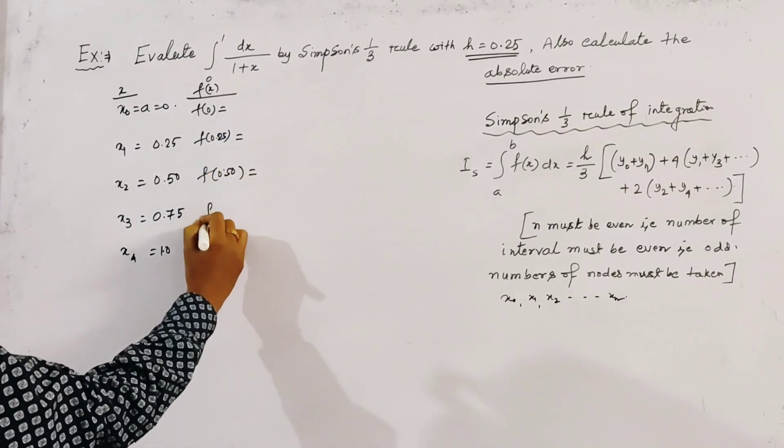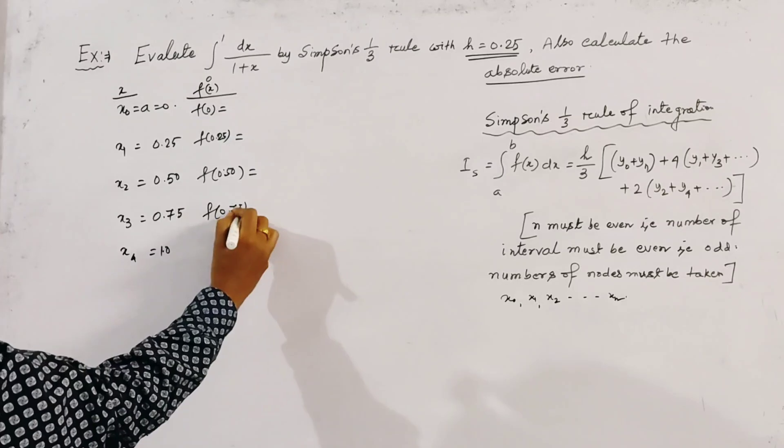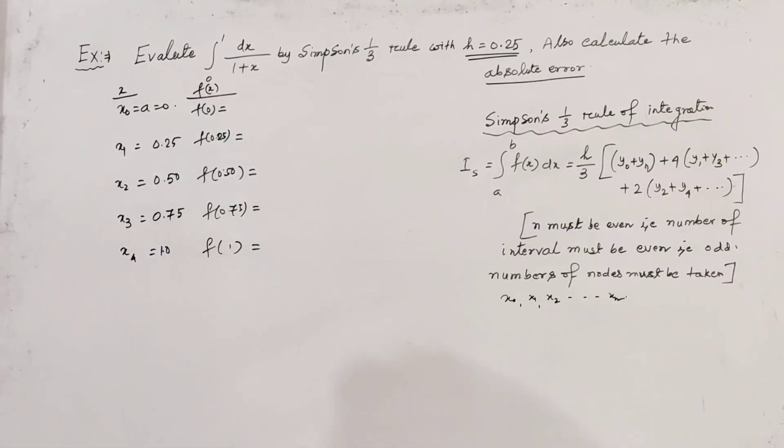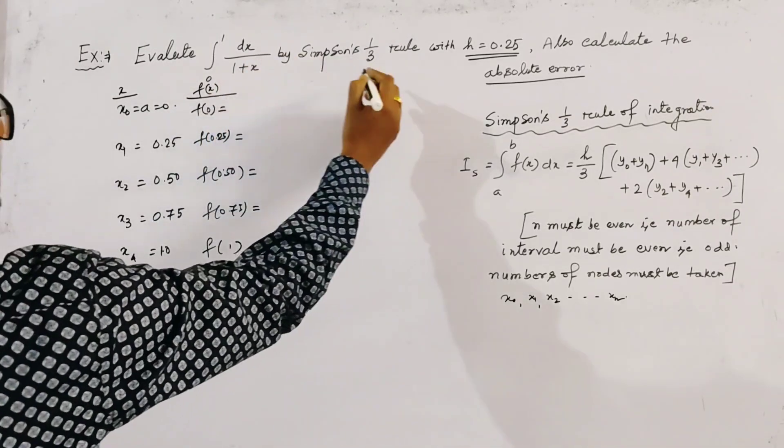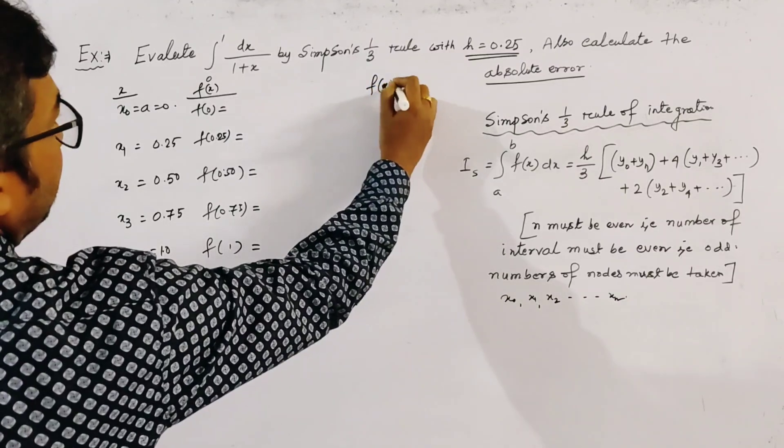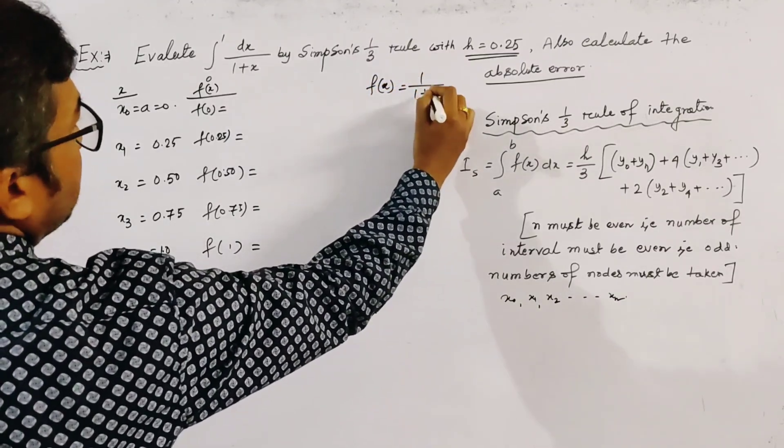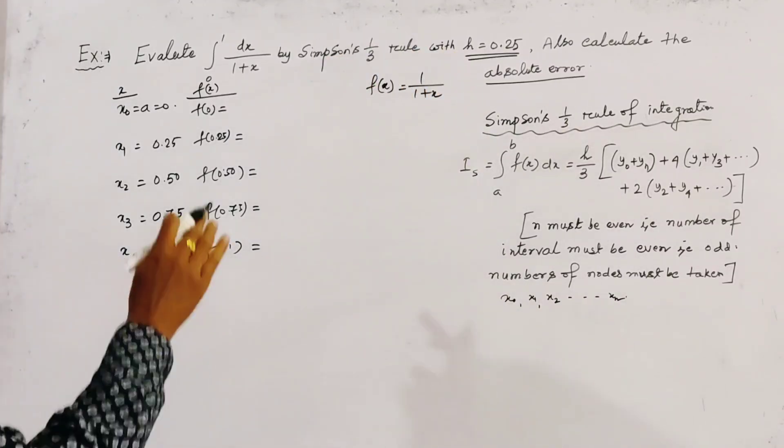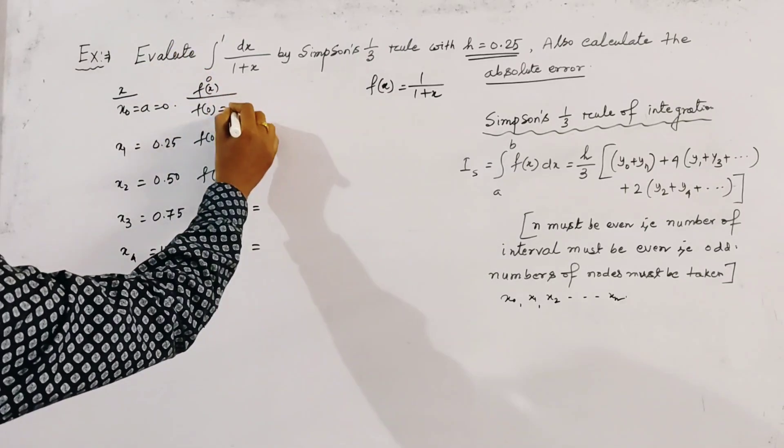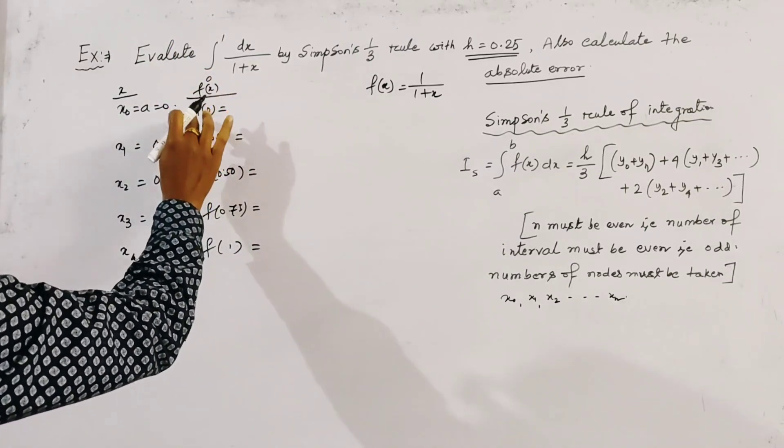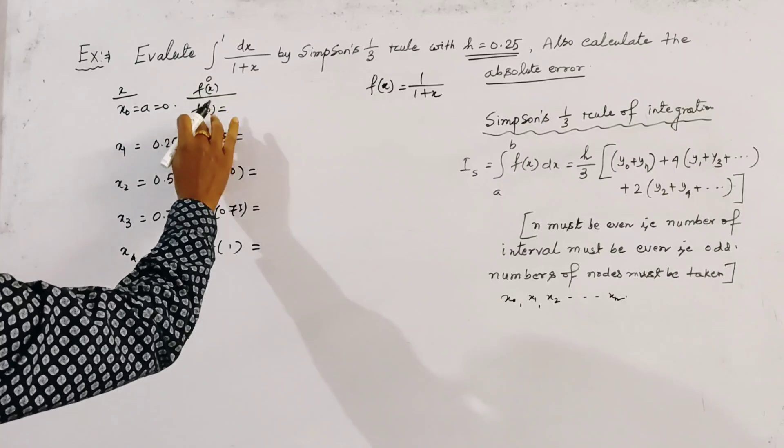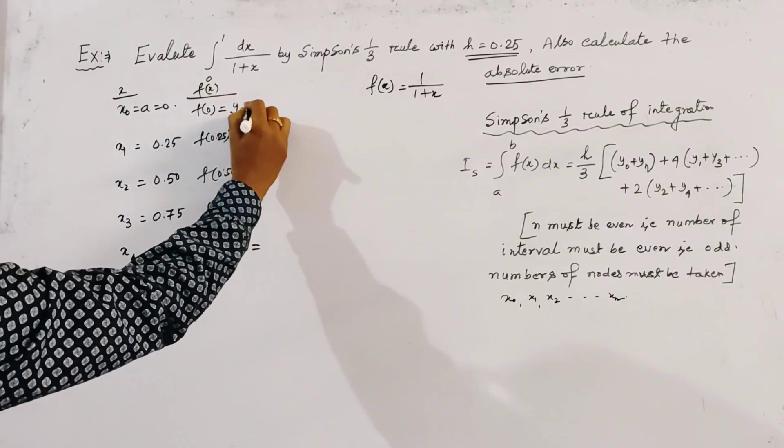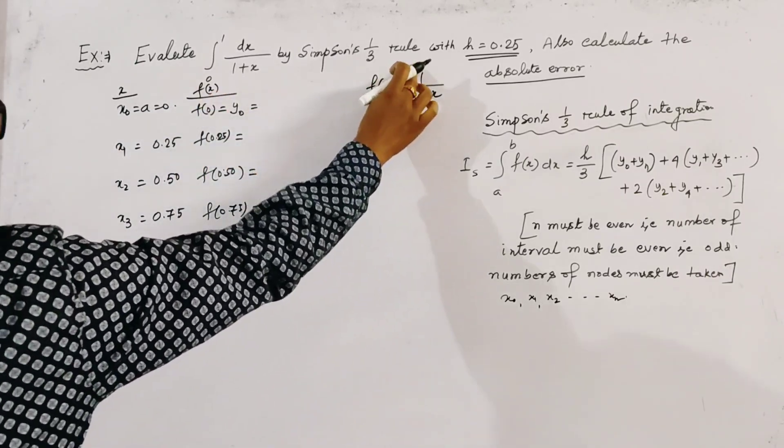f(x) means f(0.25), f(0.50), f(0.75), and f(1). Here in this integration, the function is 1/(1+x). Now we get the first coordinate y₀, which is given by 1/(1+0), which is 1.